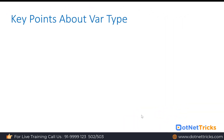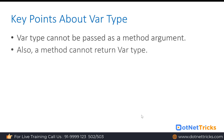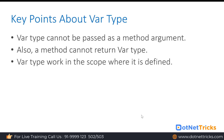Key points about var type: var cannot be passed as a method argument, meaning you cannot define a method parameter as var. The reason is that it is mandatory to assign the value to a var variable at the time of declaration. Also, a method return type cannot be var. And var is going to be used only in the scope where it has been defined. These are the few limitations we have with the var type.